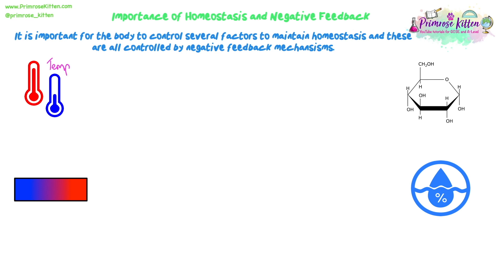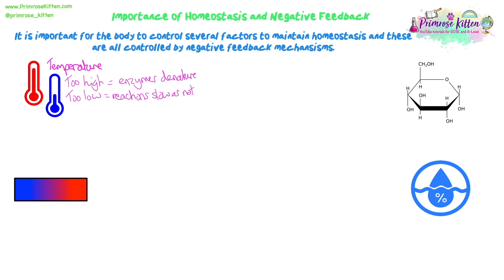It's important for the body to control several factors to maintain homeostasis, all controlled by negative feedback mechanisms. The main one is body temperature. Too high, and enzymes can denature because bonds in the tertiary structure are broken, so the substrate will no longer fit into the active site and chemical reactions — like respiration — can't occur. Too low is also bad: reactions slow down when temperature is too low because there's not enough kinetic energy for the particles to complete those reactions.